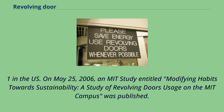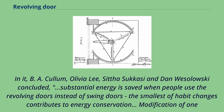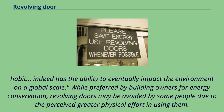On May 25, 2006, an MIT study entitled 'Modifying Habits Towards Sustainability: A Study of Revolving Door Usage on the MIT Campus' was published. The authors concluded that substantial energy is saved when people use revolving doors instead of swing doors, and that the smallest of habit changes contributes to energy conservation. Modification of one habit indeed has the ability to eventually impact the environment on a global scale.